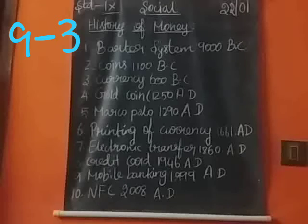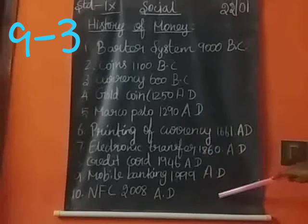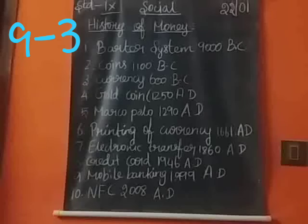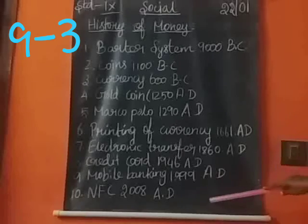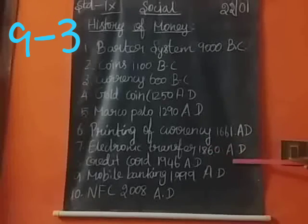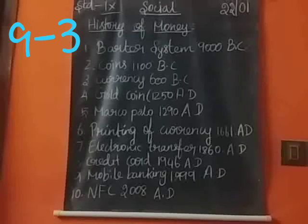The last one is NFC — Near Field Communication. It is a very fast transaction used across all points. Near Field Communication was introduced in Britain. NFC's period is 2008 AD. Mobile banking was introduced in Europe, and the credit card was introduced by John Biggins.